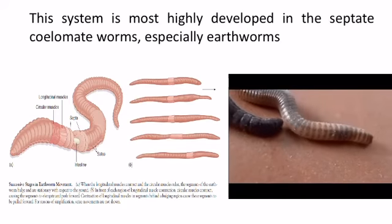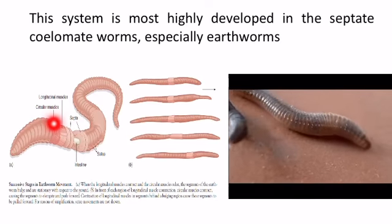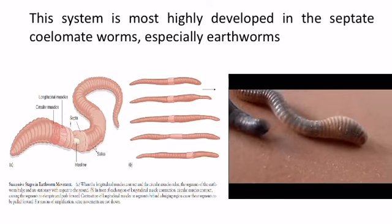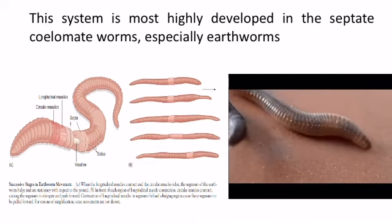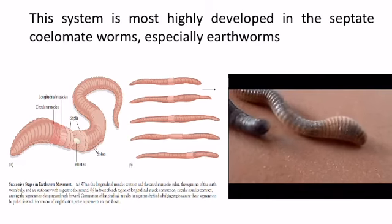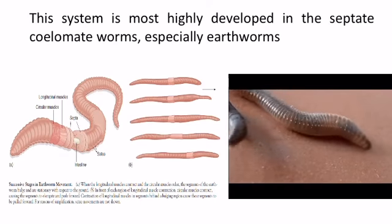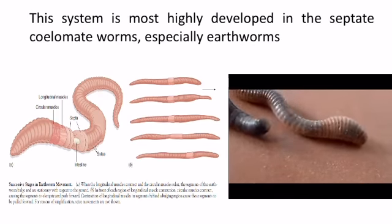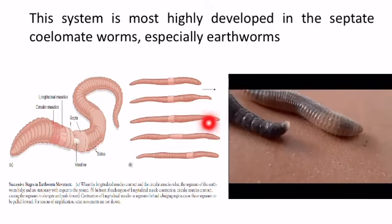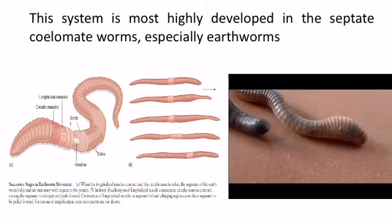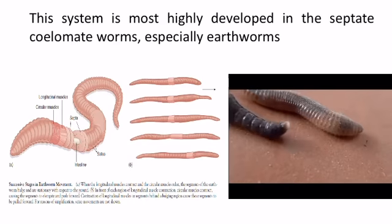This movement is visible in this video showing an earthworm moving. The earthworm has longitudinal muscles and circular muscles. When the longitudinal muscles contract and the circular muscles relax, the segments of the earthworm bulge and are stationary with respect to the ground. In front of each region of longitudinal muscle contraction, circular muscles contract, causing the segments to elongate and push forward. Contraction of longitudinal muscles in the segment behind the bulging region causes those segments to be pulled forward.